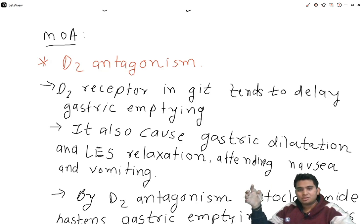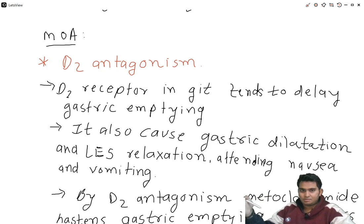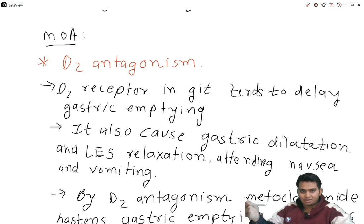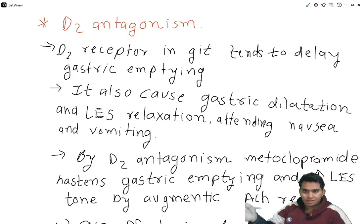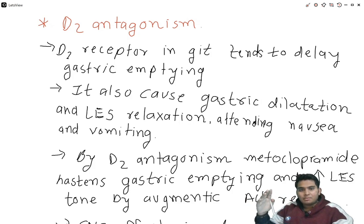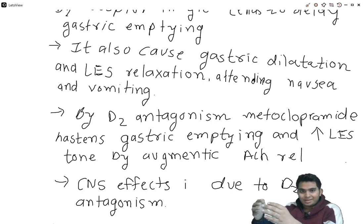The first mechanism of action of metoclopramide is D2 antagonism. By blocking D2 receptors, it increases gastric emptying. D2 receptors in the GIT tend to delay gastric emptying, cause gastric dilatation and pylorus relaxation, attending nausea and vomiting. By D2 antagonism, metoclopramide increases gastric emptying and also increases lower esophageal sphincter tone by augmenting acetylcholine release. CNS effects are also due to D2 antagonism.